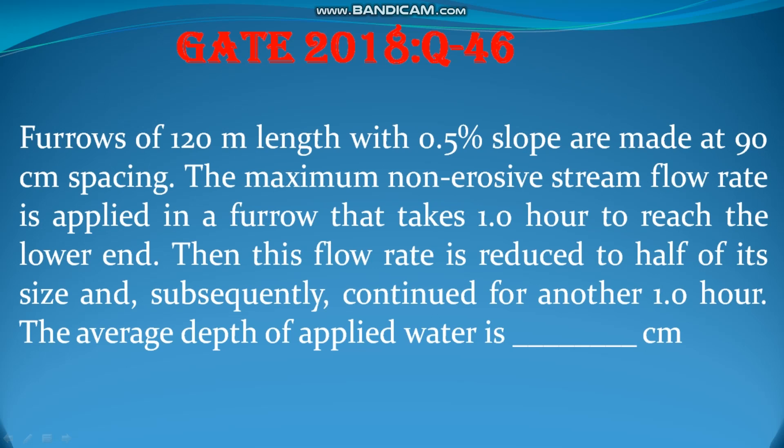Furrows of 120 meter length with 0.5% slope are made at 90 centimeter spacing. The maximum non-erosive stream flow rate is applied in a furrow that takes 1 hour to reach the lower end. Then this flow rate is reduced to half of its size and subsequently continued for another 1 hour.